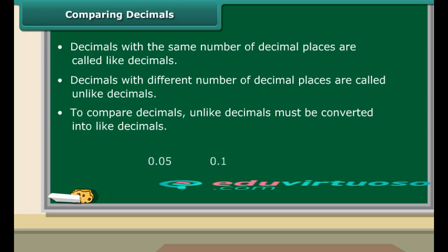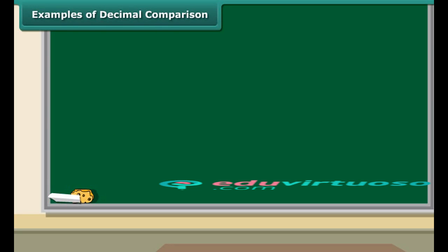Compare 0.05 with 0.1. We can write 0.1 as 0.10 because there are two decimal places in 0.05. Now it is easy to tell that 0.10 is greater as it represents 10 hundredths, whereas 0.05 represents 5 hundredths.